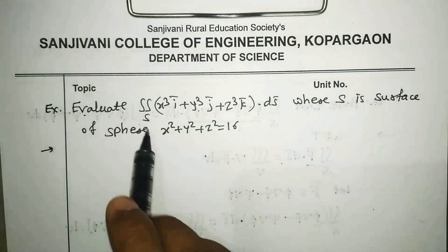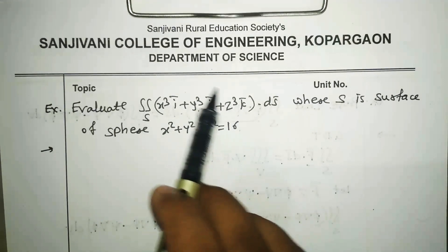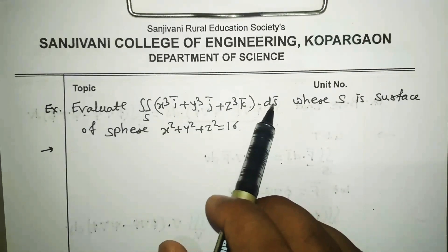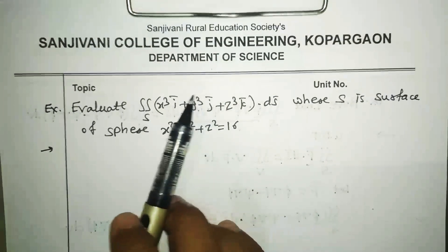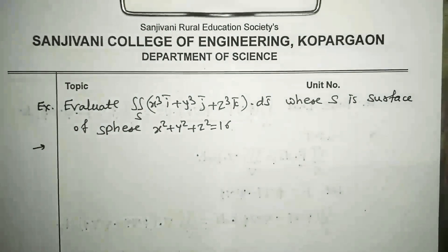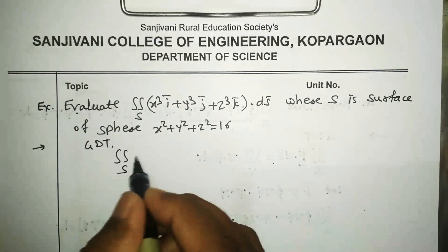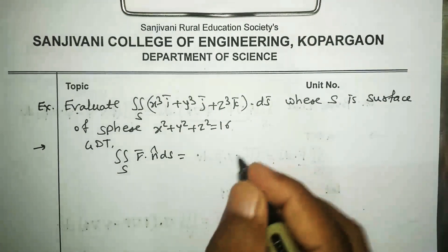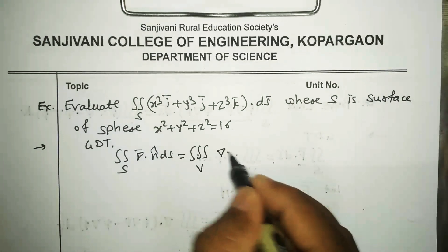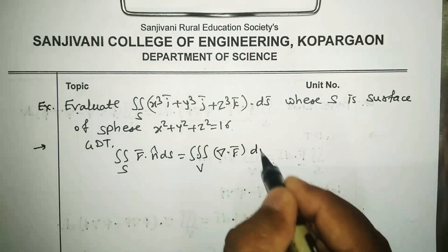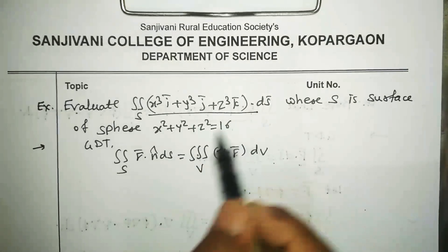We have to evaluate the double integral over the surface S of this vector quantity F-bar·dS-bar, which is similar to the LHS of Gauss Divergence Theorem. So to solve this we are going to use the Gauss Divergence Theorem: double integral over S of F-bar·n-cap ds equals triple integral over volume V of del·F-bar dV.